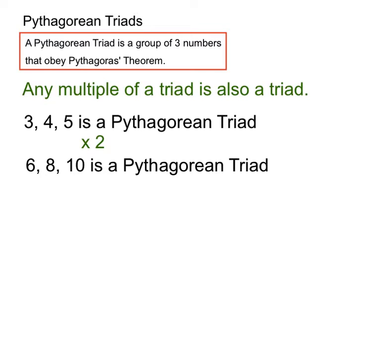Now, if we multiply that triad by 2 again and got 12, 16, and 20, if we check that out using the Pythagoras theorem, we'd find that 12 squared plus 16 squared equals 20 squared as well. So, any multiple, you can be confident that the multiple is a triad as well.